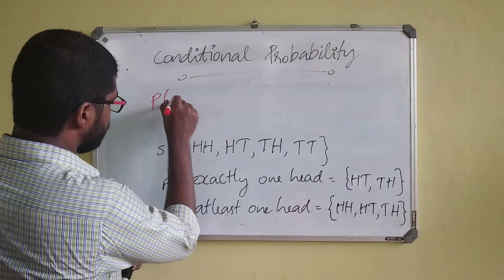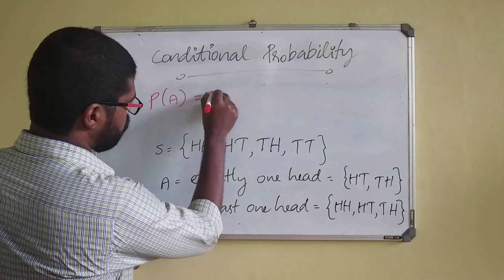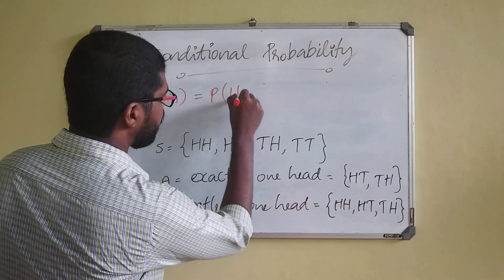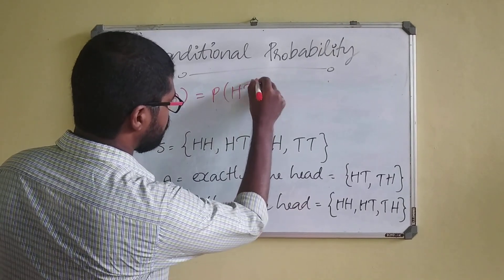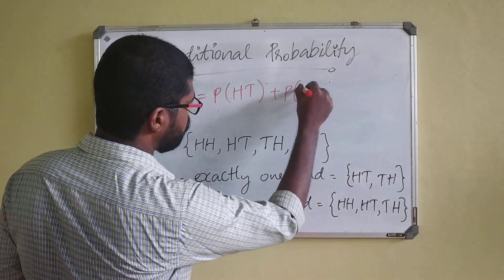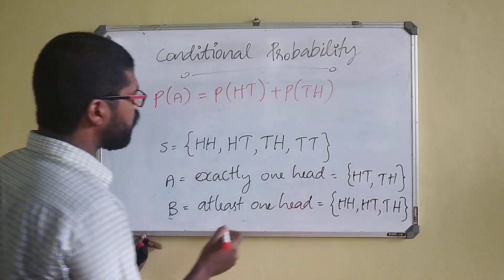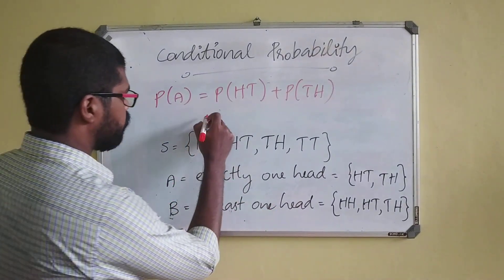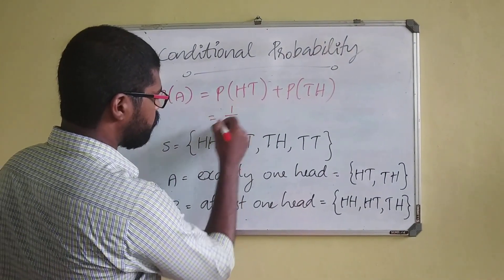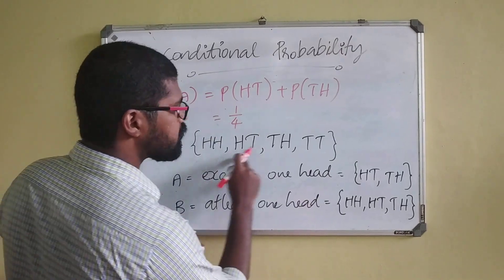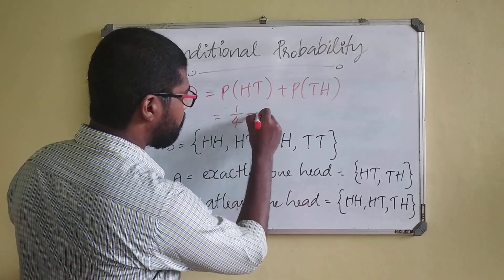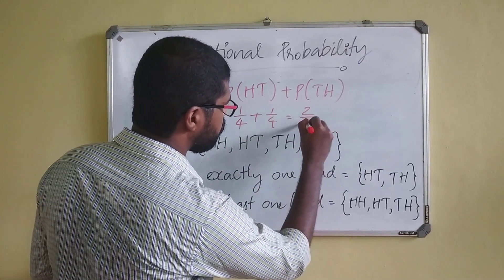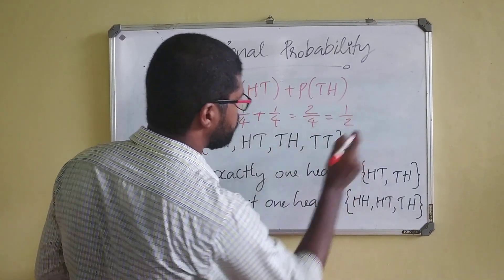Using normal probability, the probability of A — that is exactly one head — is probability of head-tail plus probability of tail-head. Since we have 4 sample points, that is 1/4 plus 1/4, which equals 2/4, that is 1/2.